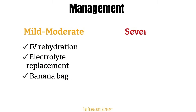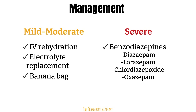Patients with severe symptoms are managed with long-acting benzos, and this includes diazepam, lorazepam, chlordiazepoxide, and oxazepam. The reason why benzos work for these patients is because they potentiate the effect of GABA. This will increase GABA activity and neutralize the overly agitated and stimulated CNS.